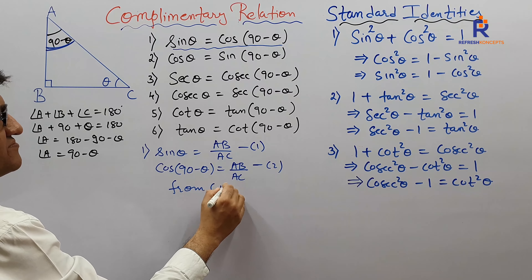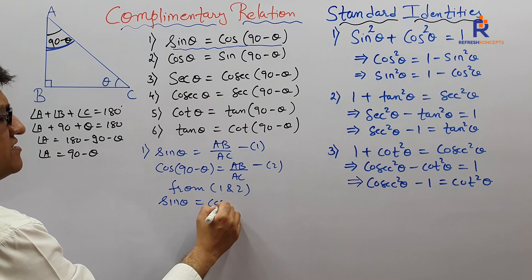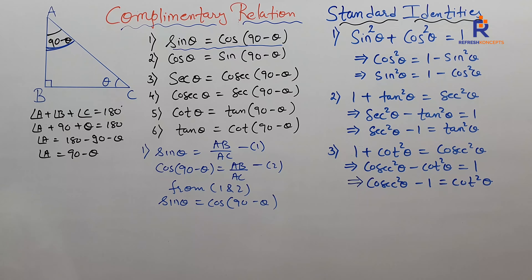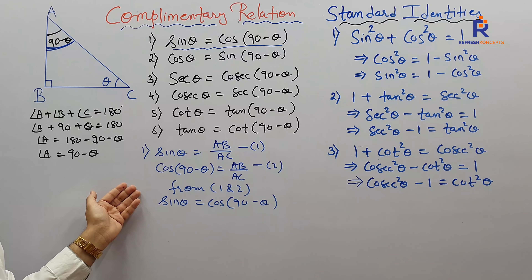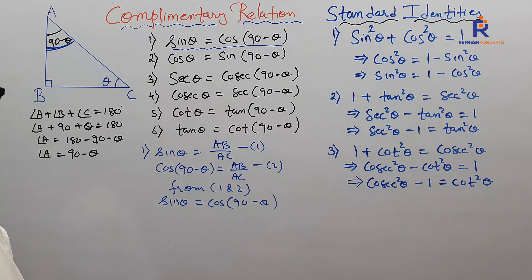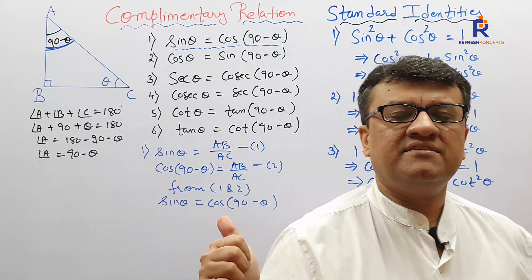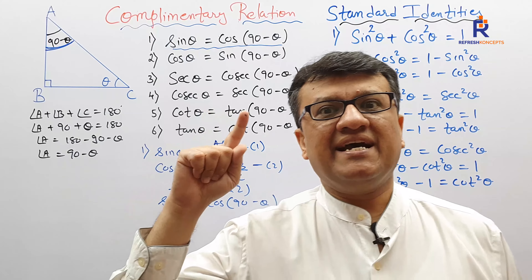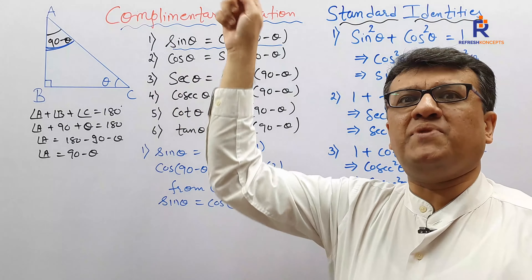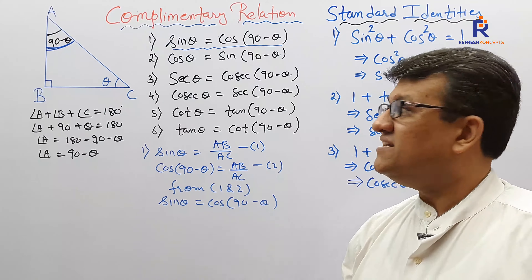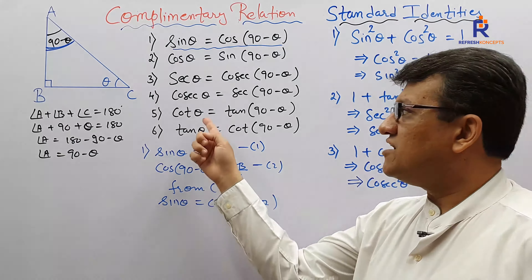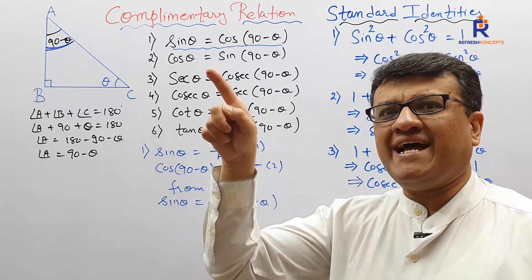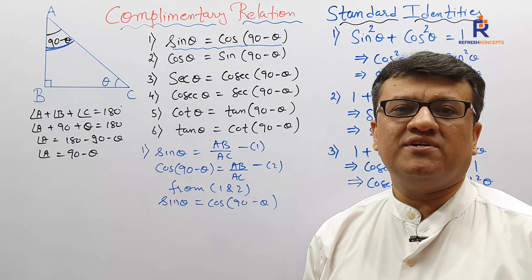From equation one and two, sine theta equals cos(90 minus theta). I want all of my children to perform the remaining five in the same way. So the complementary relations are: sine theta is cos(90 minus theta), cos theta is sine(90 minus theta). Remember — cosine is the complement of sine, so there exists a complementary relation. Similarly, secant and cosecant are complements, and cotangent is the complement of tangent.